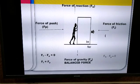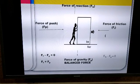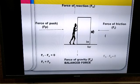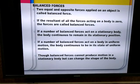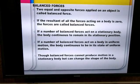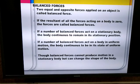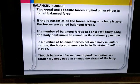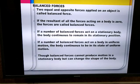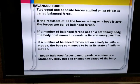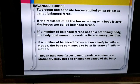When balanced forces act on an object, the object remains stationary and is not set into motion. Two equal and opposite forces applied on an object are called balanced forces. If balanced forces act on a stationary object, the object continues to remain stationary; if they act on an object moving with uniform motion, it continues with uniform motion. Although balanced forces cannot produce motion in a stationary object, they can change the shape of the object.